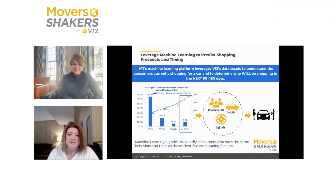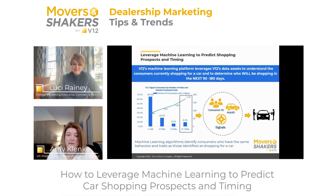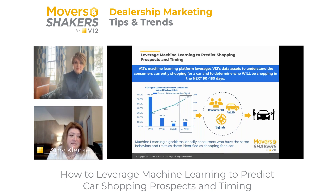There are two things that we can do with our machine learning platform to help people. The first is we look at historical data and location data — your mobile location data — to see where people are shopping in advance.